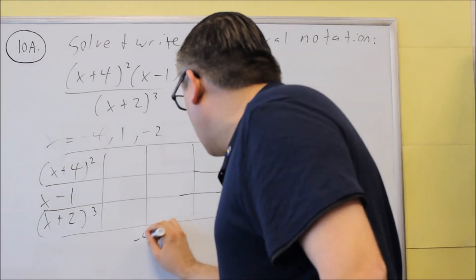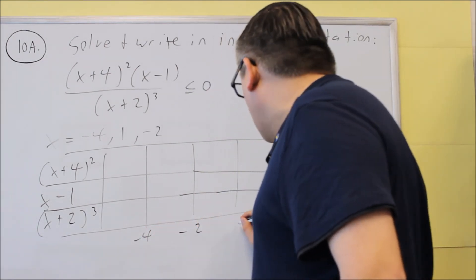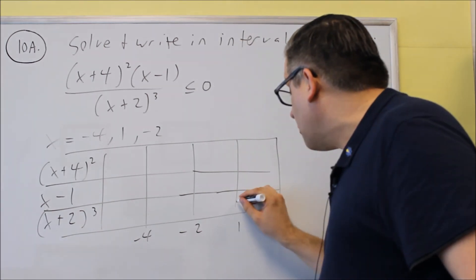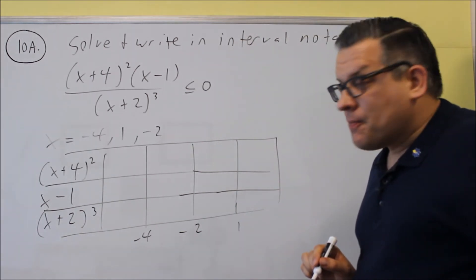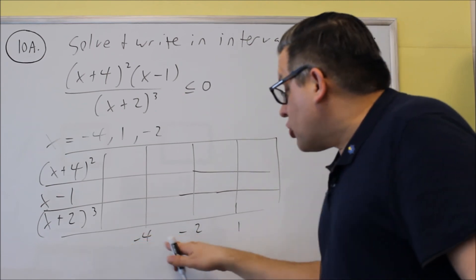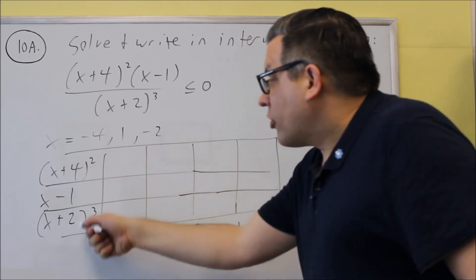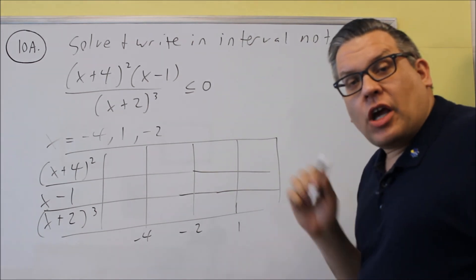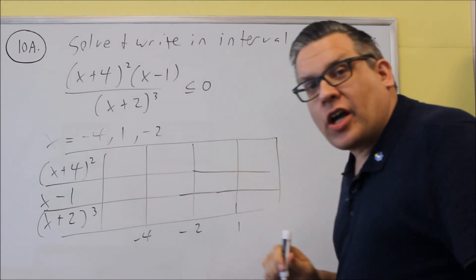So I'm going to go ahead and label those negative 4, negative 2, and 1. Make sure you put those in order from smallest to largest. And then you're going to pick test numbers in between each of these regions and you're going to put them over into here, and you're going to indicate whether you get a positive or a negative value.